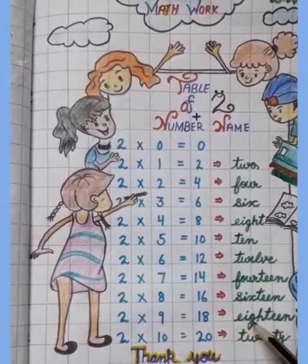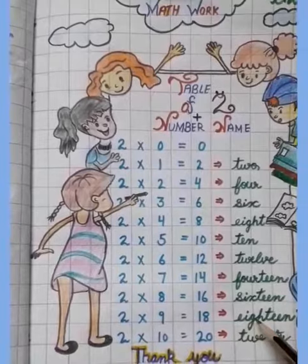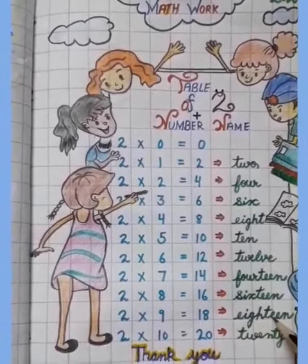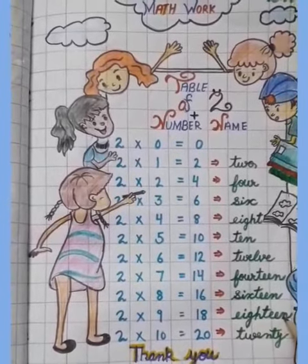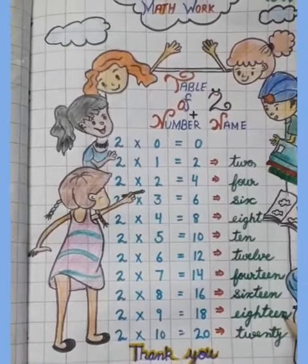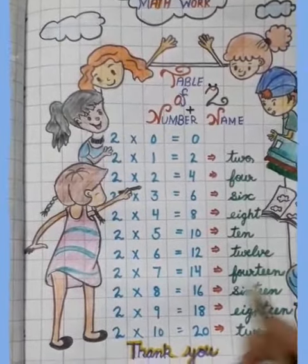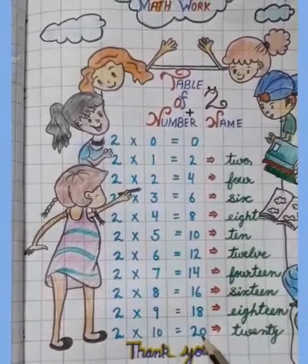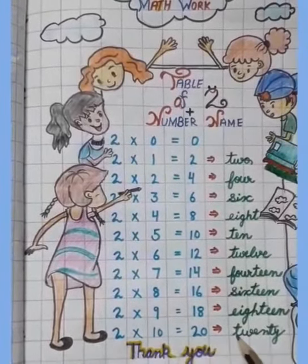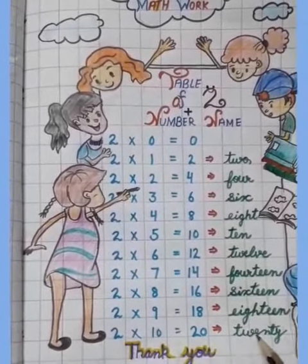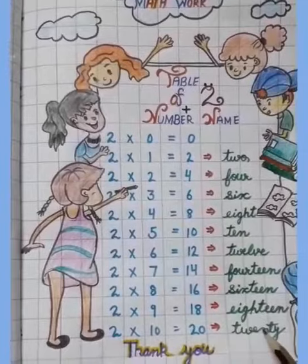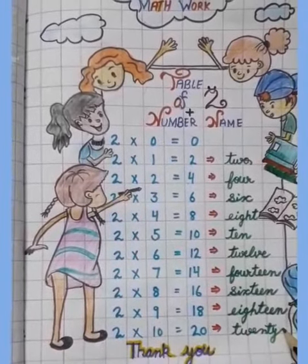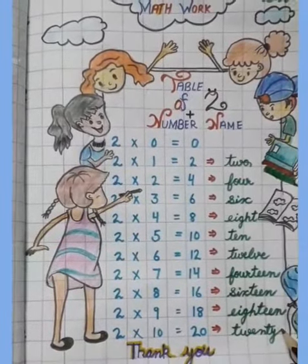e-i-g-h-t-e-e-n, 18. 2 tens are 20, t-w-e-n-t-y, 20.